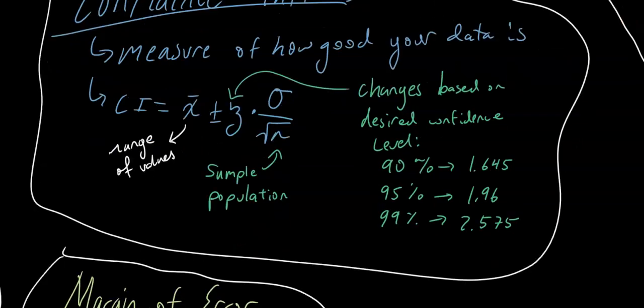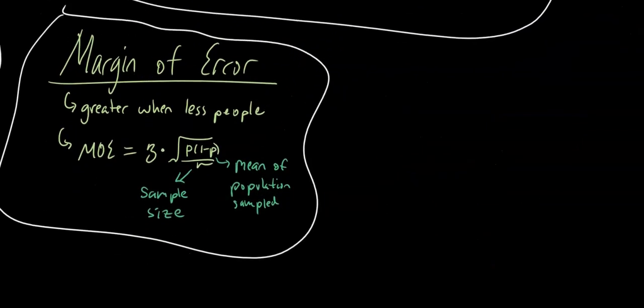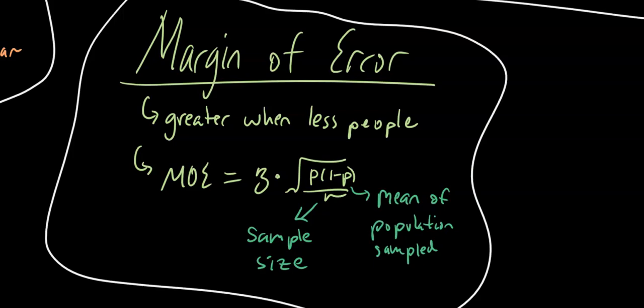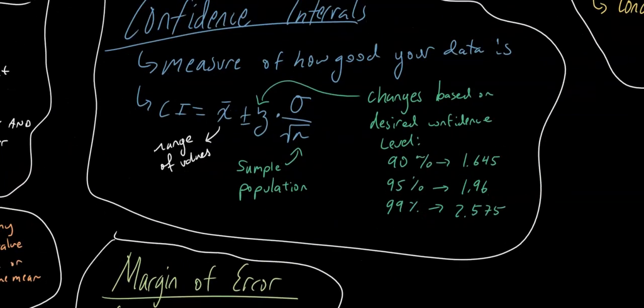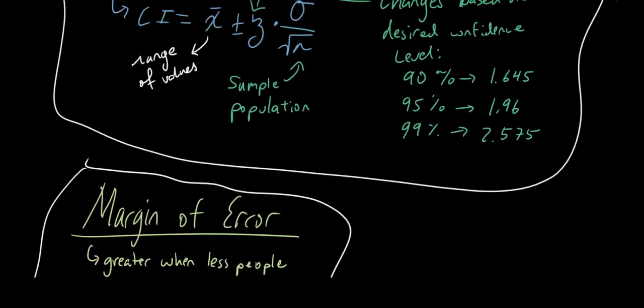Now let's say you want to calculate the margin of error. The margin of error is greater when there's less people. This makes sense. If you have a survey with a lot more people, it's going to be more accurate than a survey with less people. The margin of error can be calculated by multiplying z times p times the square root of p times 1 minus p over n. This z is the exact same z that we used right here, and we would use these exact same values.